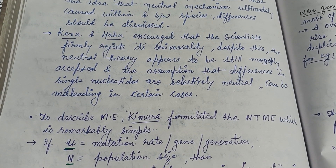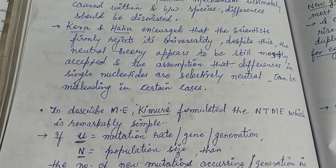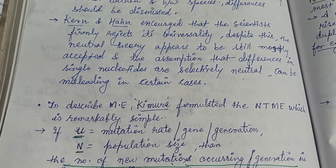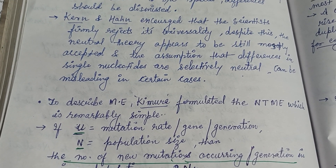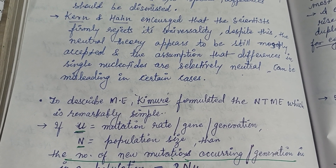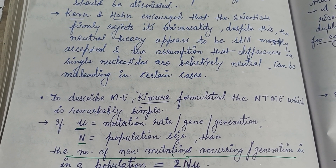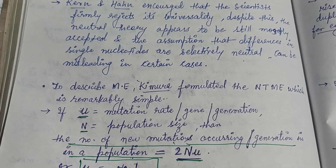Despite this, the Neutral Theory appears to be still mostly accepted, though the assumption that differences in single nucleotides are selectively neutral can be misleading in certain cases.